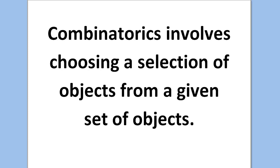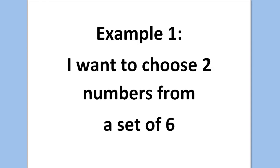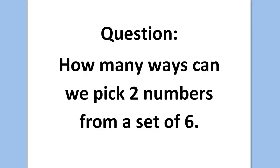Combinatorics involves choosing a selection of objects from a given set of objects, and factorials are involved in the calculations. Example 1: I want to choose 2 numbers from the set {1, 2, 3, 4, 5, 6}. For example, we might pick 2 and 3, or 3 and 5. Combinatorics asks the question: how many ways can we pick 2 numbers from a set of 6?